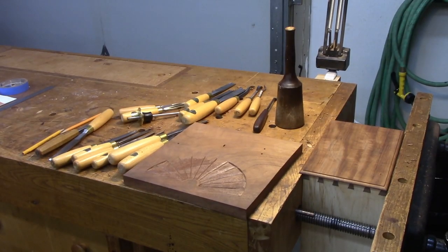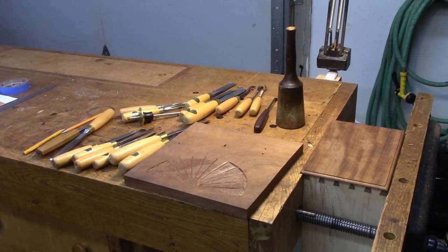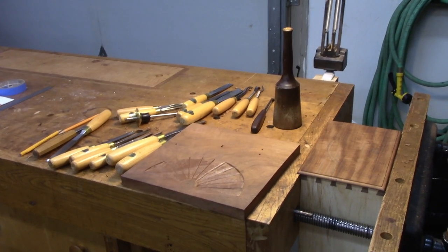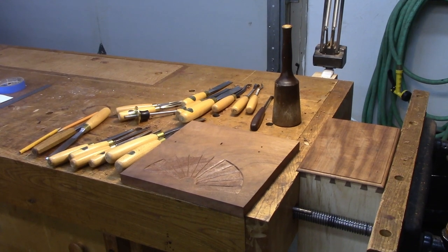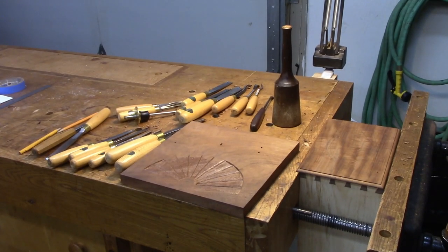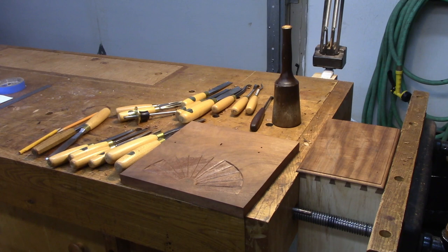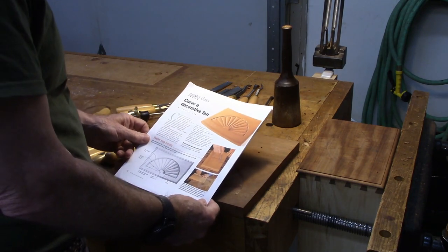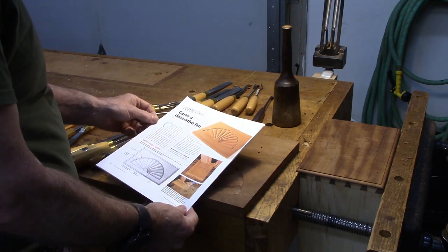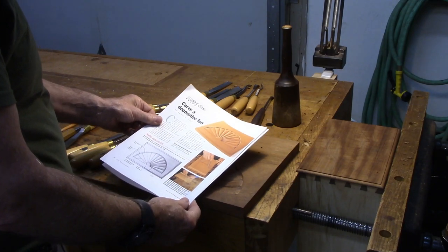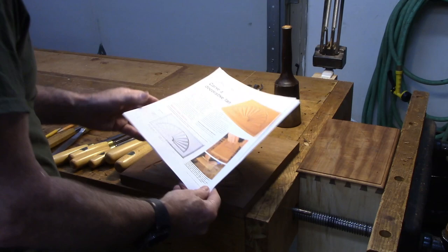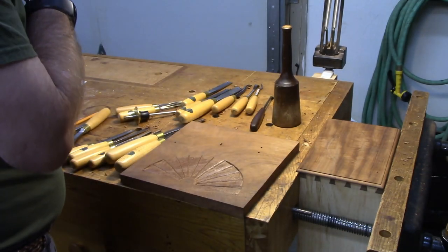I'm getting ready to carve the fan on the drawer that I forgot to do before I assembled it. I found an article in Fine Woodworking magazine from 2008 that Phil Lowe wrote on how to lay out a fan on a drawer front. It was a really good article, so that's something to review and get started with.